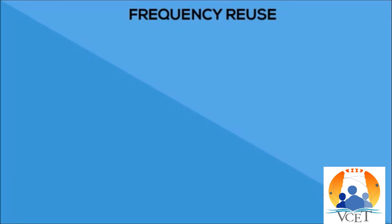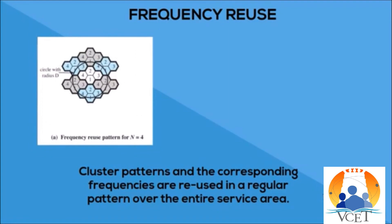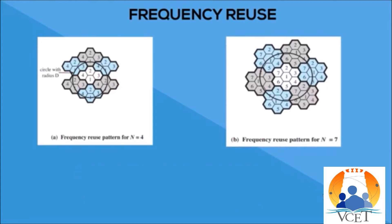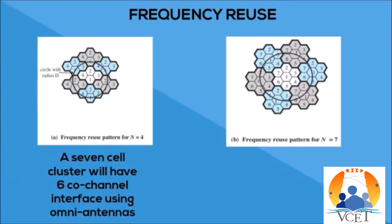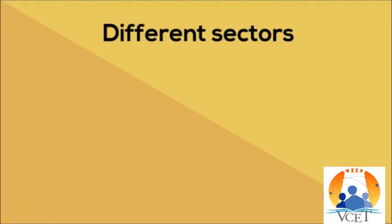The cluster pattern and corresponding frequencies are reused in a regular pattern over the entire service area. The first diagram shows a frequency reuse pattern for N equal to 4, and the next for N equal to 7. For the first diagram, a 7-cell cluster has 6 co-channel interferers using omnidirectional antennas. But when directional antennas are used, this number is reduced to 2, allowing more frequency reuse and higher capacity.